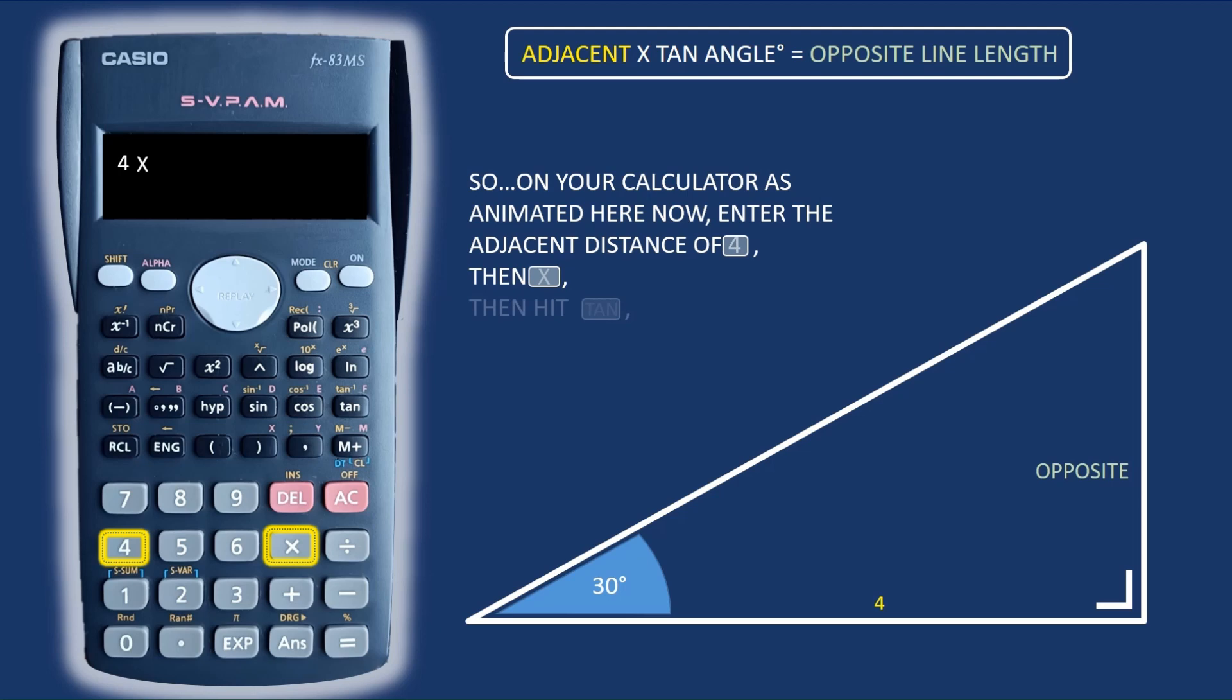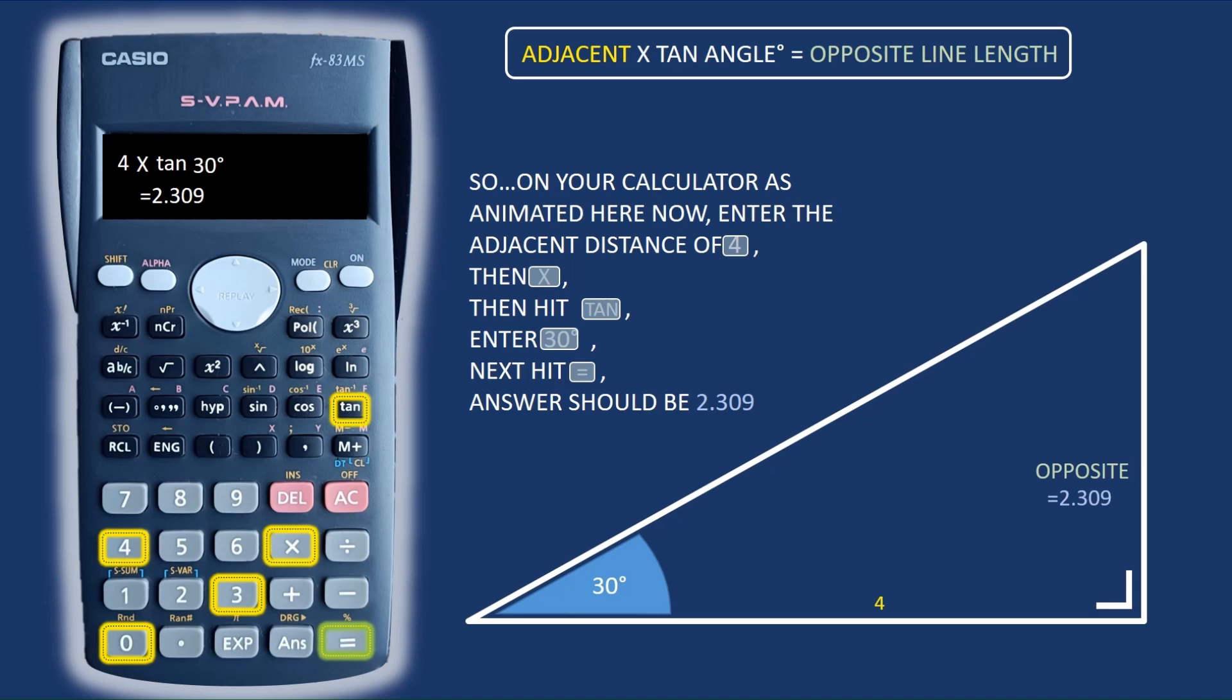So hit 4 multiplied by TAN and hit ENTER 30. And when you do that, if you hit the equal sign on your calculator, your answer should be 2.309 for the line that's opposite the known or given angle.